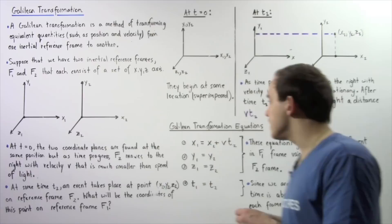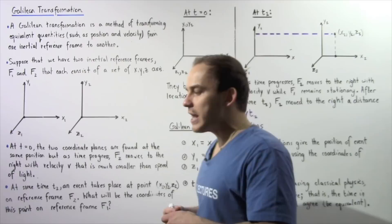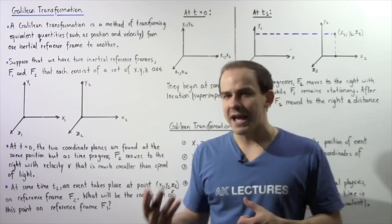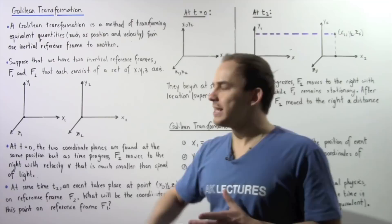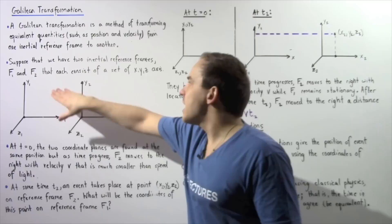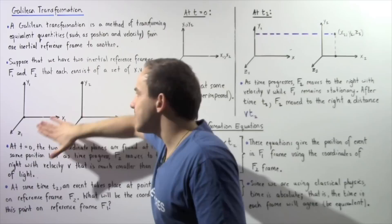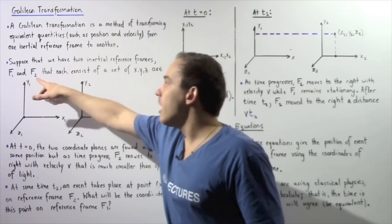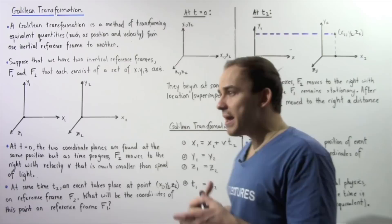In this lecture, we're going to derive the Galilean transformation equations that will allow us to transform the position of an object or an event from one frame to a second frame. We'll begin by supposing that we have two inertial reference frames, F1 and F2, each consisting of a set of axes X, Y, and Z.